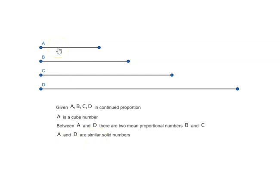And remember A is a cube number. That means all the sides are equal. That means D will also have sides which are equal to each other because they are in proportion to the sides of A.